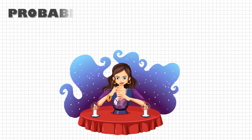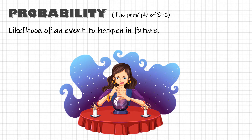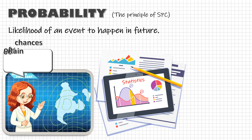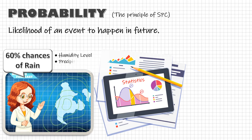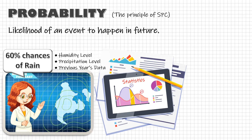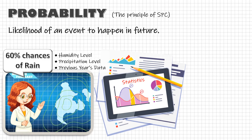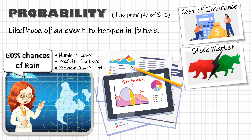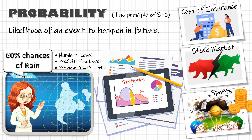Probability is the likelihood of an event to happen, and it is determined not based on some magic but on statistics. For example, if a weather forecast predicts 60 percent chances of rain, it is based on actual humidity and precipitation levels plus historic data of previous years. In the same way, we use probability for calculating the cost of insurance and prediction of stock markets, sports, politics, and so on.